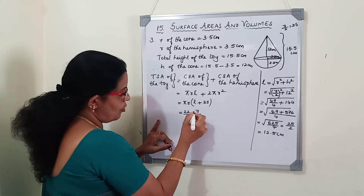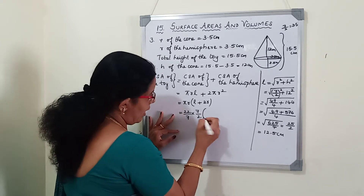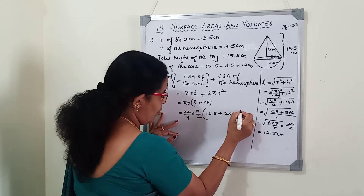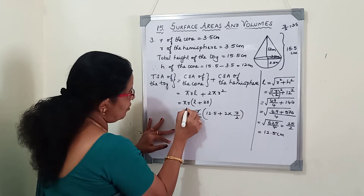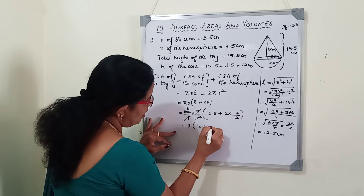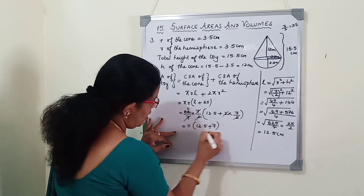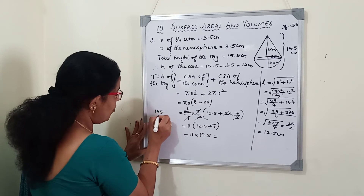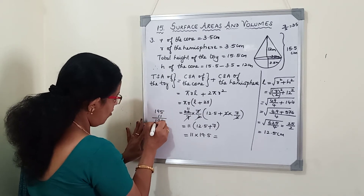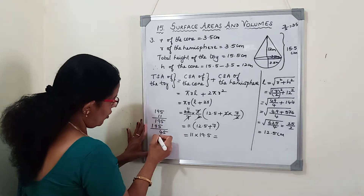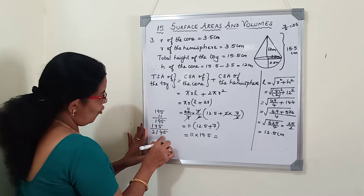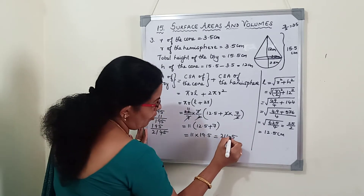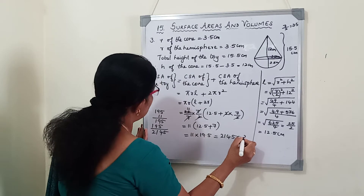After cancellation we have 11 × (12.5 + 7) = 11 × 19.5 = 214.5 cm². So 214.5 cm² is the TSA of the toy.